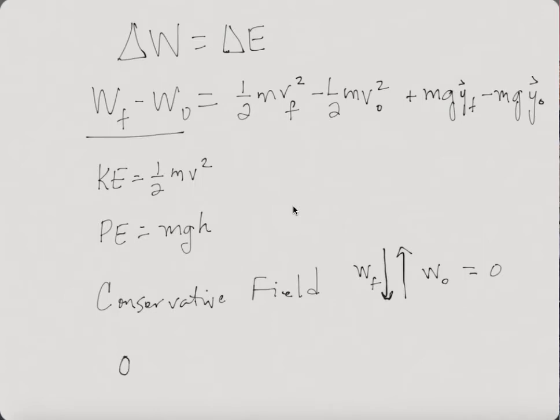So if that is 0, we can write the same thing. We can put all of our final... So we're going to end up putting everything in the initial case on the left-hand side and everything in the final case on the right-hand side.